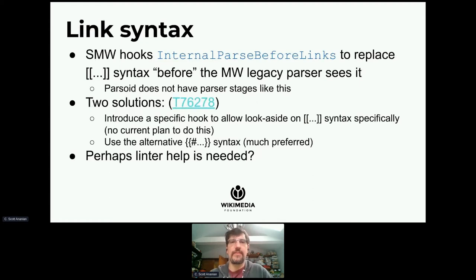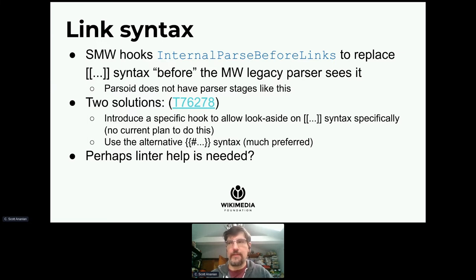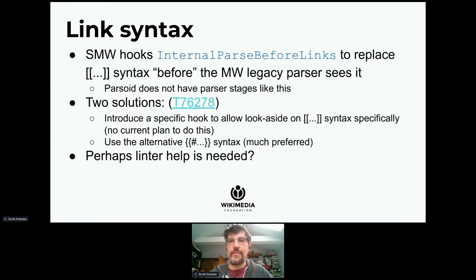The link syntax: Semantic MediaWiki hooks into internal-parse-before-links to replace the square bracket syntax before the legacy parser sees it. Parsoid doesn't have a parser stage like that — we have a tokenizer that grabs it all at once. There are basically two options: one is to allow a specific hook to make the square bracket syntax extensible, a more narrow hook than just giving you the entire WikiText at some intermediate phase. But the alternative — and much preferred — is to use the existing parser function syntax, which is how every other extension in the MediaWiki ecosystem handles cases like this. It does seem like linter help is needed to allow folks to more gently transition existing syntax.